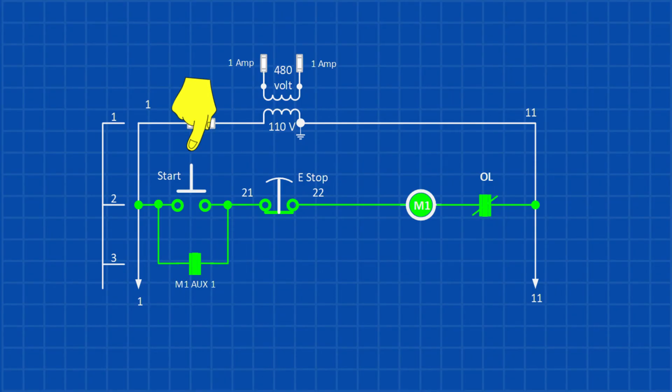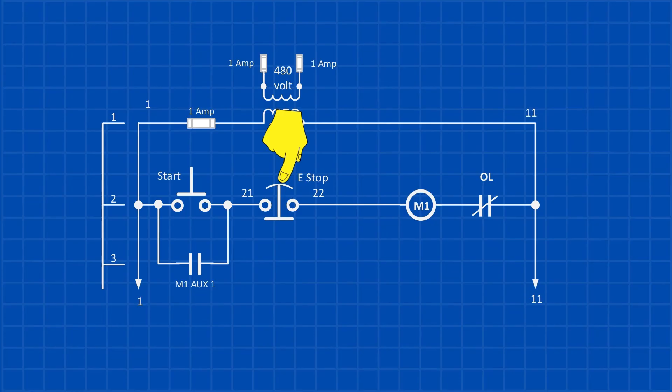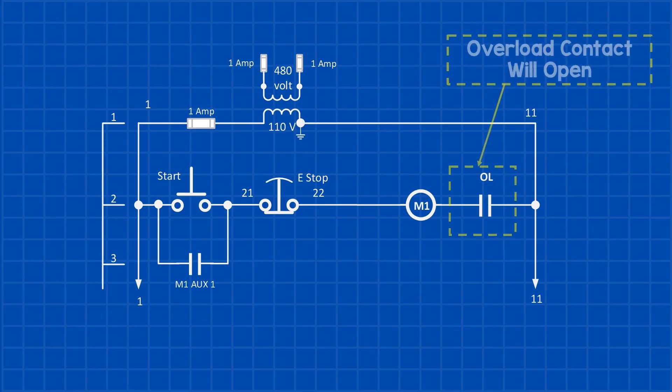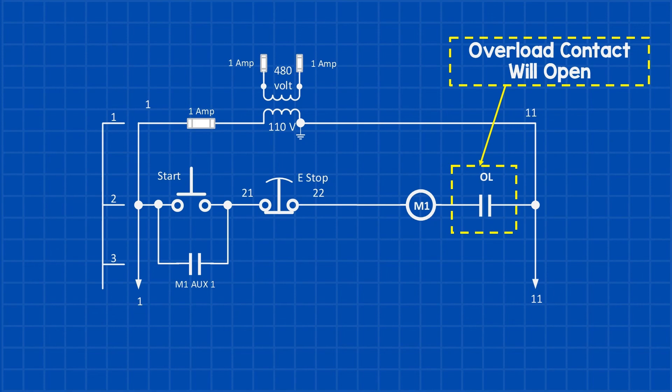The motor starter coil stays energized, or latched, until you press a separate stop button, which is wired in series with the circuit. Additionally, the coil will de-energize if an overload contact trips, cutting off the power.